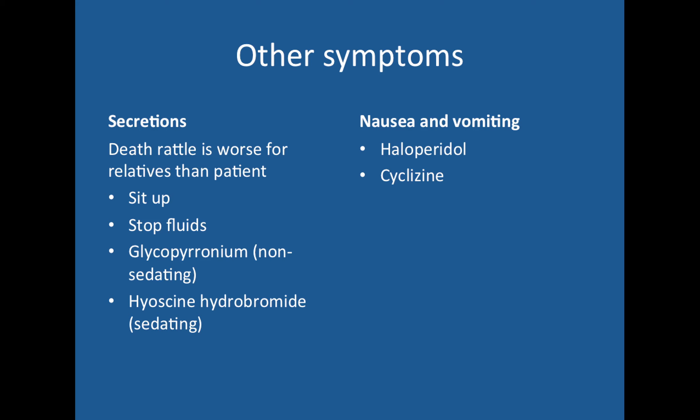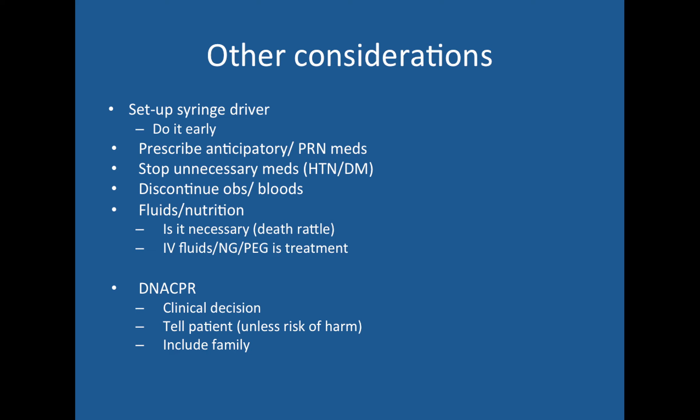For secretions and the death rattle: sit the patient up, stop fluids if they're overloaded. Two important drugs are glycopyrronium — a non-sedating antisecretory — and hyoscine hydrobromide — a sedating antisecretory. For nausea and vomiting, use haloperidol or cyclizine. Set up a syringe driver early and prescribe all anticipatory medications — the palliative care team will prescribe glycopyrronium, midazolam and others in anticipation so nurses can give the right meds without calling a doctor each time. Stop unnecessary medications such as antihypertensives, diabetic medication, and furosemide unless stopping will cause symptoms.